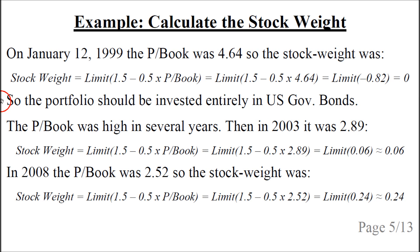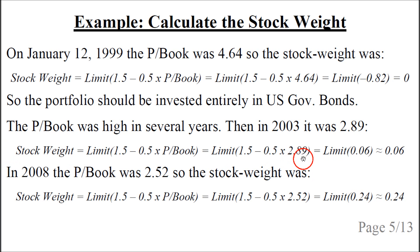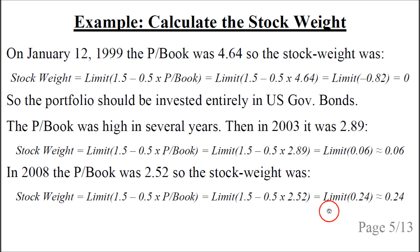This means the entire portfolio should be invested in US government bonds. The price-to-book ratio was high in several years. Then in 2003, it had decreased to 2.89, giving a stock weight of 0.06 — so 6% should be invested in the S&P 500. Then in 2008, the price-to-book ratio was 2.52 and the stock weight is 0.24.